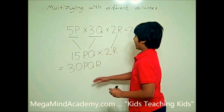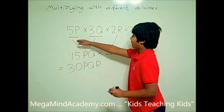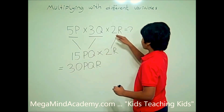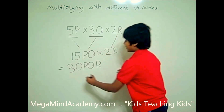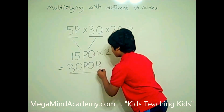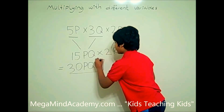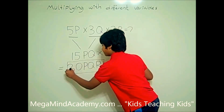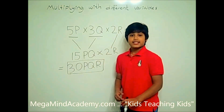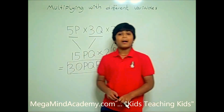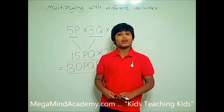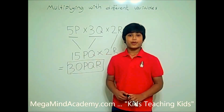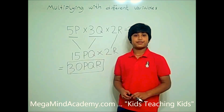So the answer to 5p times 3q times 2r is equal to 30pqr. Today we learned about multiplying with different variables. Thank you for watching this video.